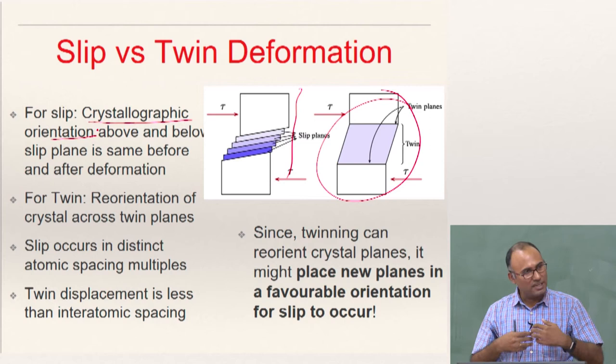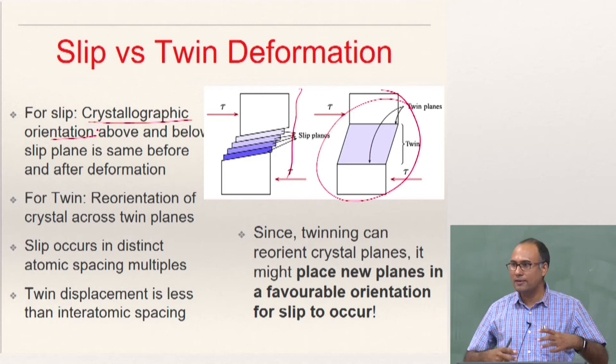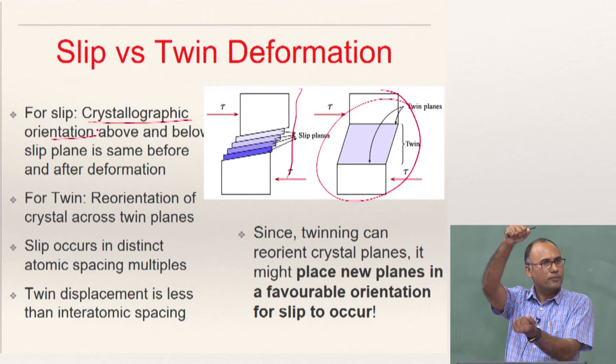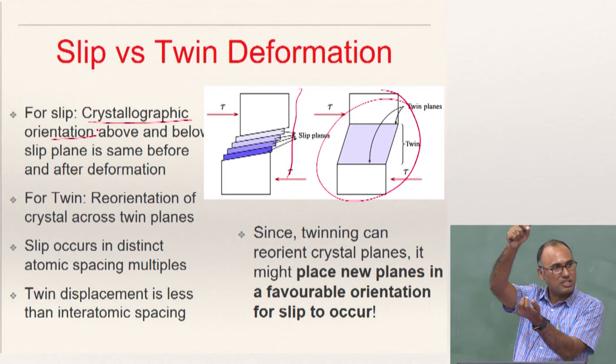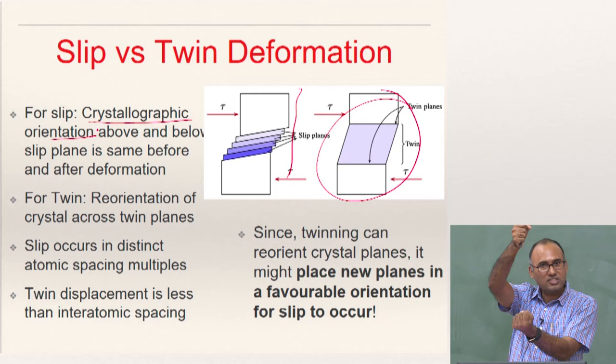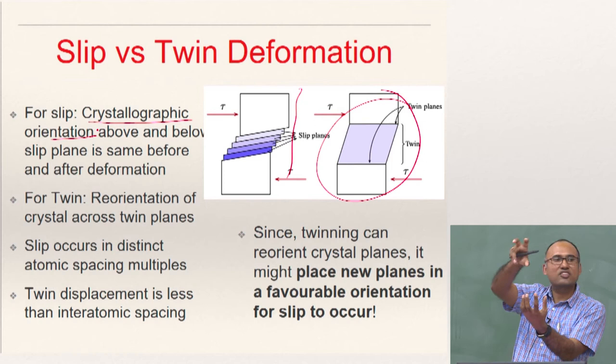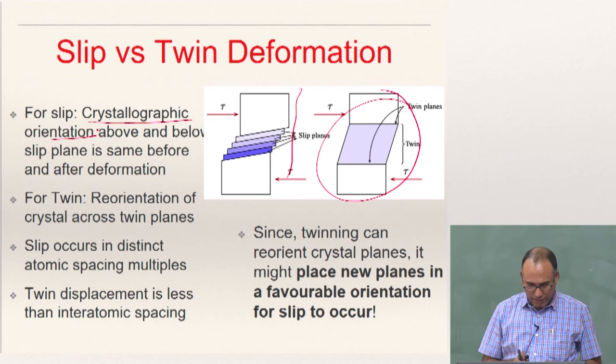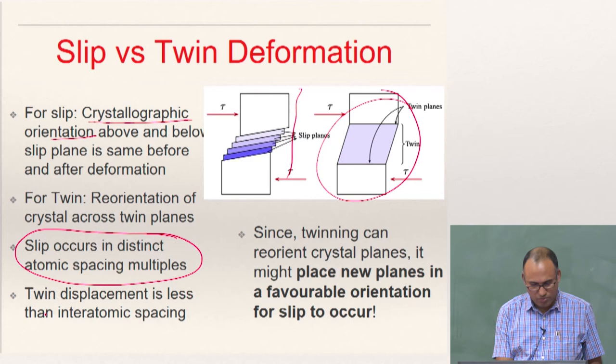That is typically what happens in many BCC and HCP materials. Initially you will cause twinning, and then the twinning deformation reorients the plane in such a way that you will activate new slip systems. Activating new slip systems means the phi and lambda values are changing without actually changing the direction of loading — the crystals reorient themselves. This twinning causes reorientation and hence brings new slip systems into action, allowing further slip. Slip occurs in distinct atomic spacing multiples whereas twin displacement is less than interatomic spacing.